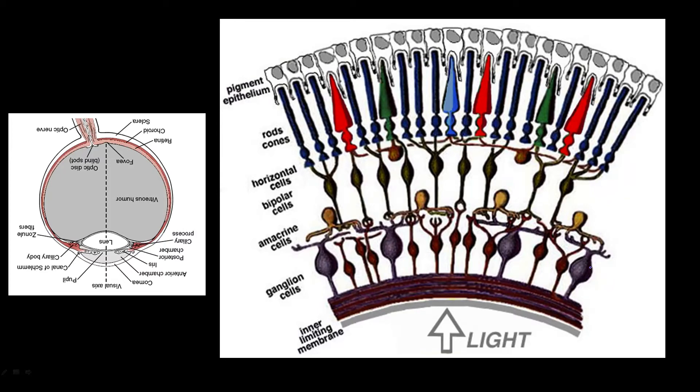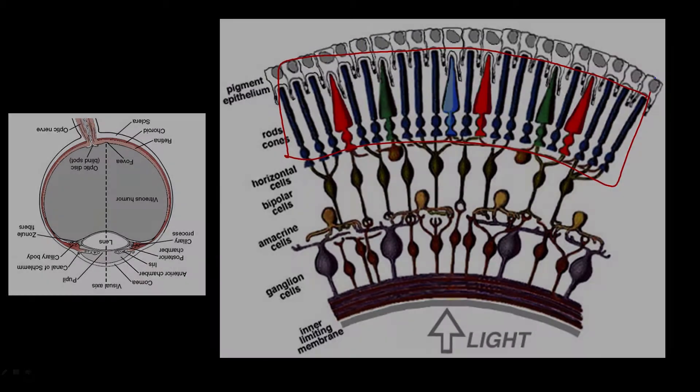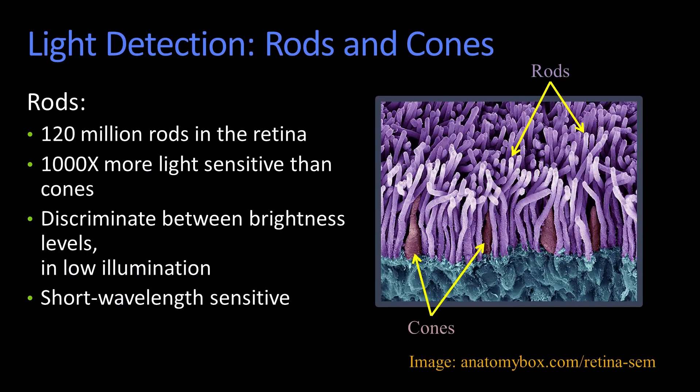If you were to take a look a little more carefully at these photoreceptors and actually look at them for real, you would see two types. You would see rods and cones. We've looked at this picture before when we were talking about color, but now we want to talk about the anatomy.